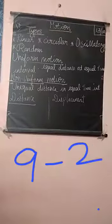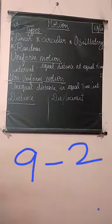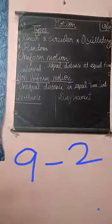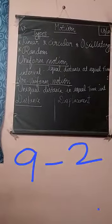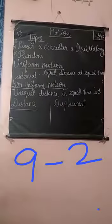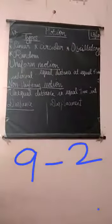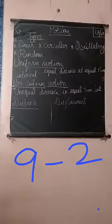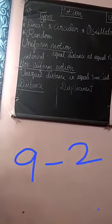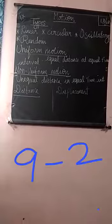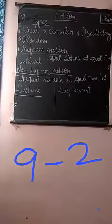For example, if your car covers 20 kilometers in the first hour, 20 kilometers in the next hour, and 20 kilometers in the third hour, here the distance is equal and the time interval is also equal. For every one hour, it crosses 20 kilometers. So, it is said to be uniform motion.